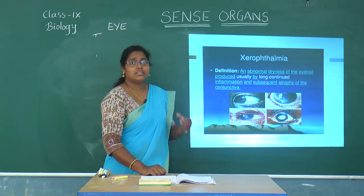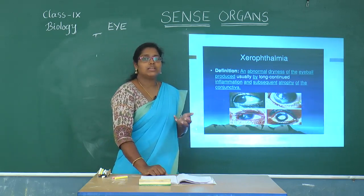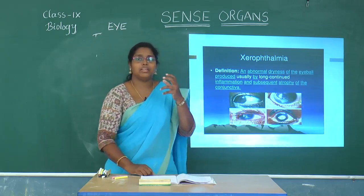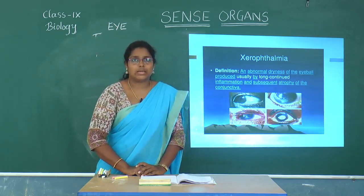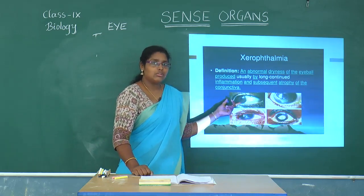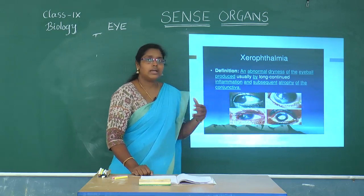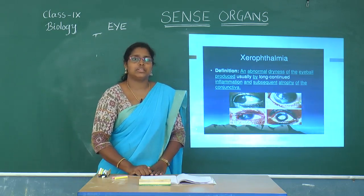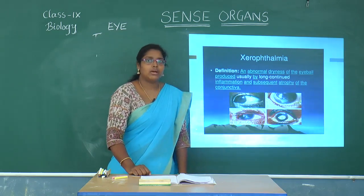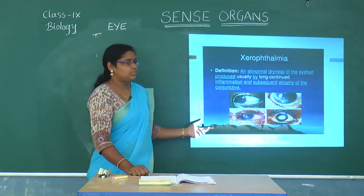The next condition is xerophthalmia. We studied that tears play a very important role in keeping the eyes moist. If the eyes are not moist, the cornea — which is the outermost layer formed by the sclerotic layer — tears due to dryness. This corneal tearing later results in blindness. To avoid this, the eyes need to be kept continuously moist. If not, it leads to a condition called xerophthalmia, which can cause blindness.